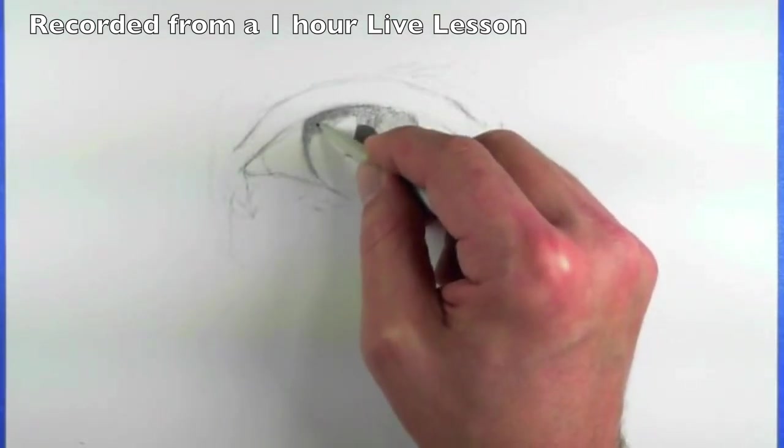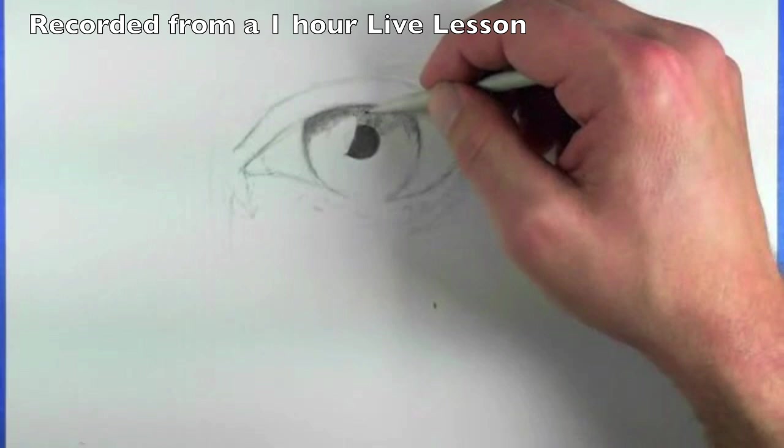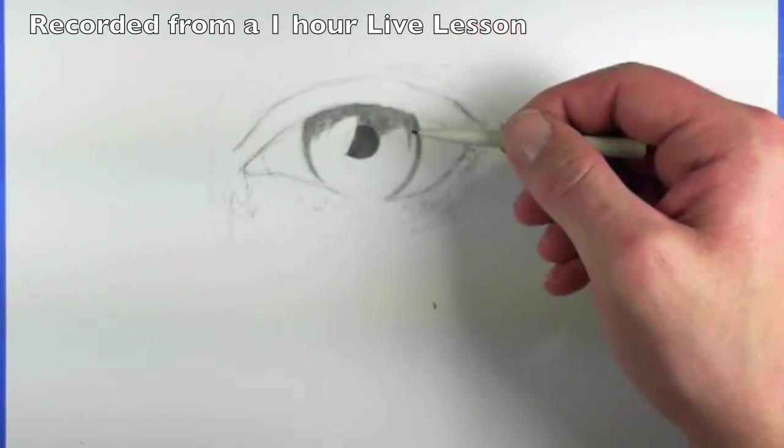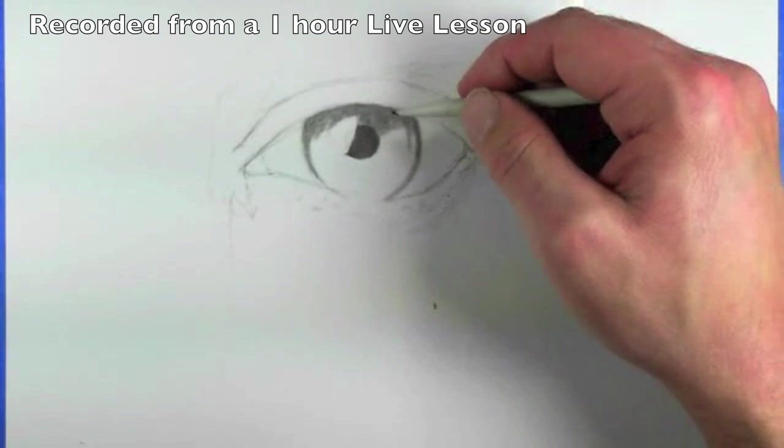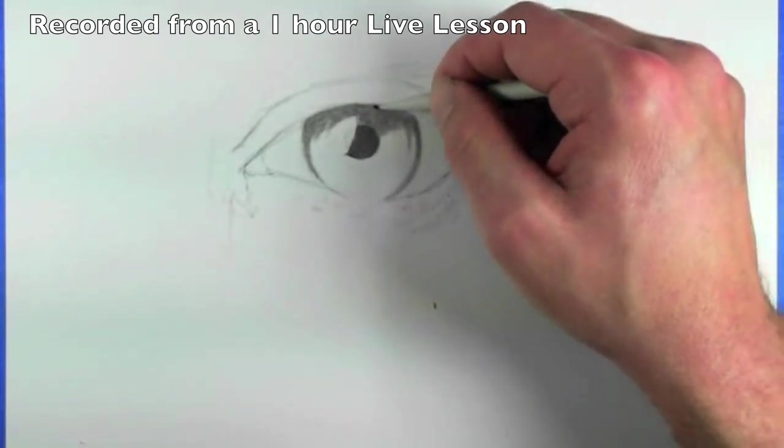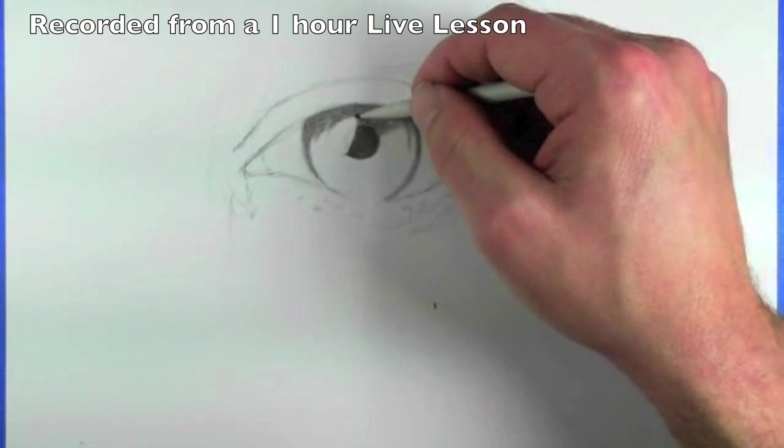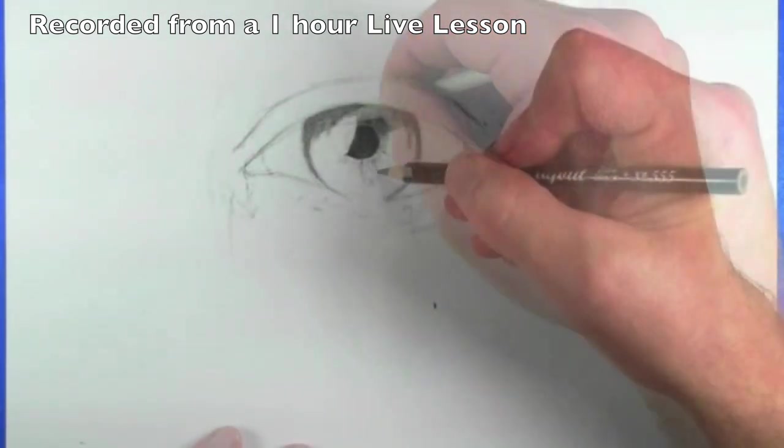I haven't pulled out my paper towel yet. Graphite gets on the tip anyway, and you can almost draw with the tip of the blending stump or the blending tortilla.